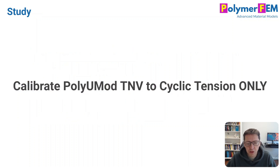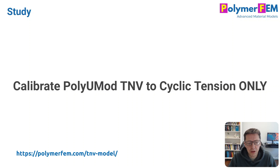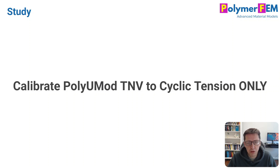The first step is to calibrate a material model to the cyclic tension data. I'm using the PolyUMod TNV model — the material model I've shown in many of my previous videos to be really accurate for different classes of thermoplastics. It's the most accurate model in most cases, so I'm starting with that.